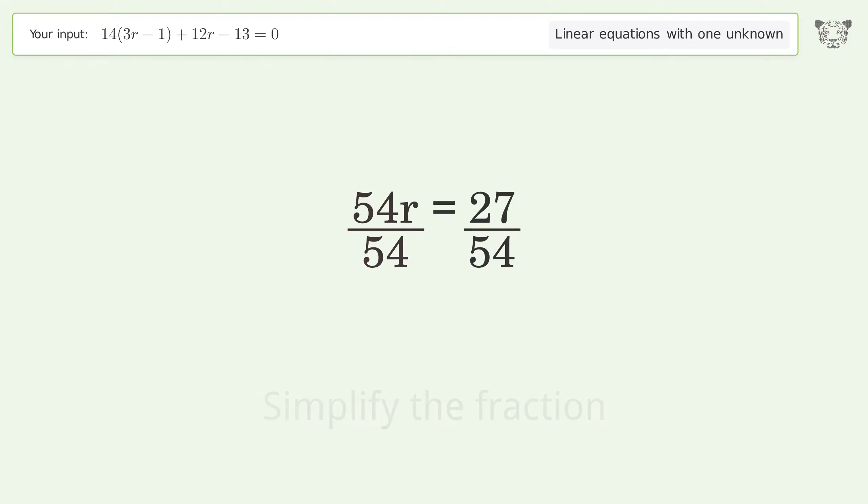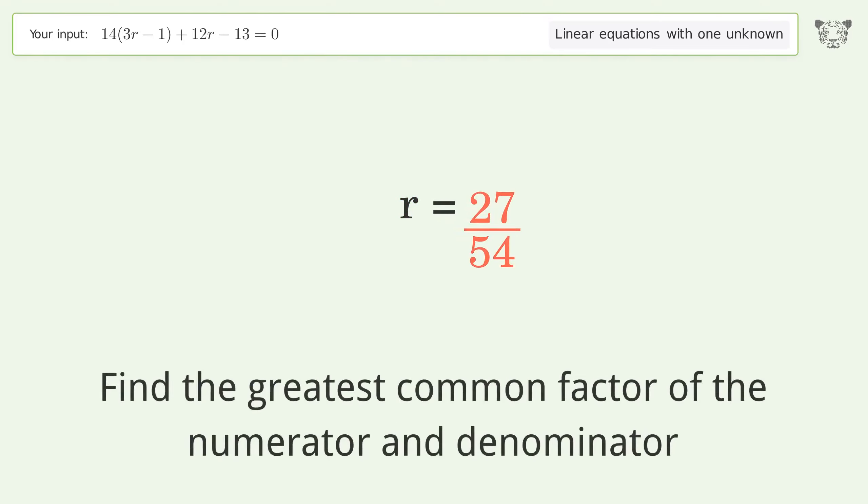Isolate the r. Divide both sides by 54. Simplify the fraction.